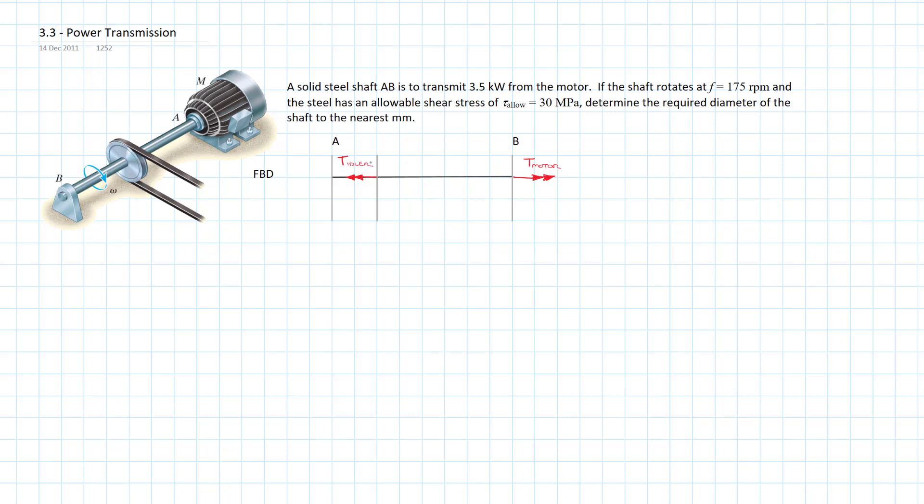So really what we need to do is figure out what the torque is at the motor. That will tell us what the torque is at the idler. That solves the torque between the idler wheel and the motor, and then we can size the shaft so that we don't exceed the allowable stress of 30 megapascals. Let's get on about it.